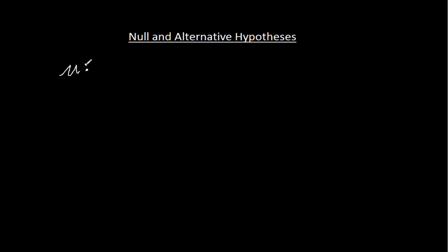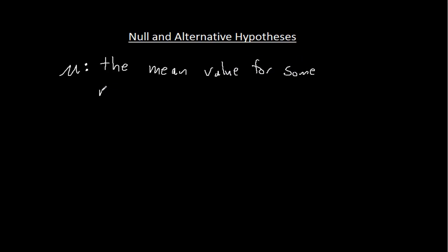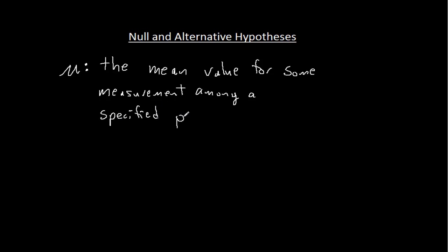When we do a hypothesis test, what's going on is often really helpful to compare it to what happens in a courtroom. So first of all we have mu, and mu is what we're used to thinking of it being — it's a mean, it's an expectation. It's the mean value for some measurement, maybe it's height, maybe it's weight, maybe it's IQ, maybe it's test score, for some measurement among a specified population. So we have some population that we're trying to make a conclusion about, and here's the mean measurement for that population.